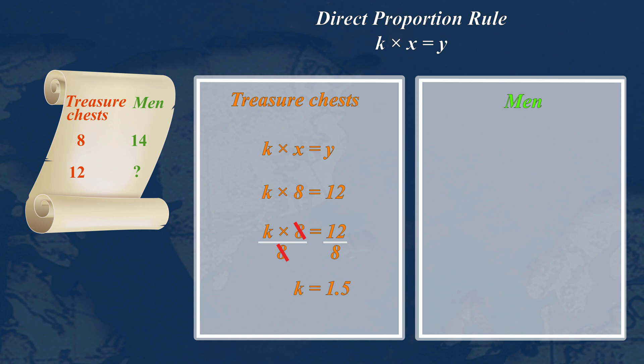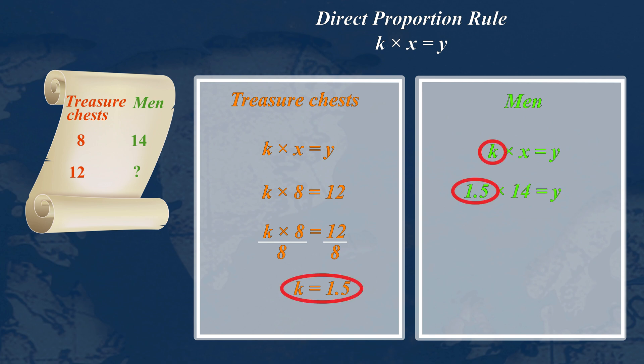This means that the constant of proportionality, K, is 1.5. In the second part of the answer, let's consider the increase in the number of men needed to carry the 12 chests. We now know that the constant of proportionality, K, is 1.5.